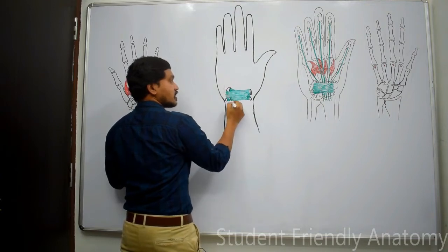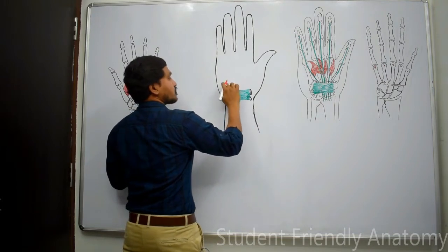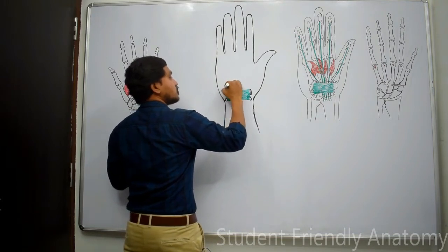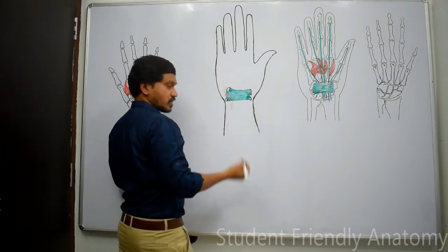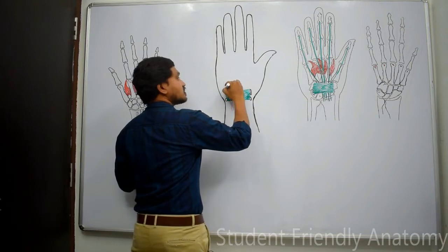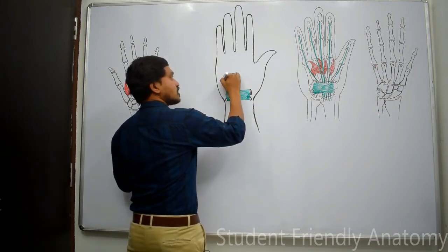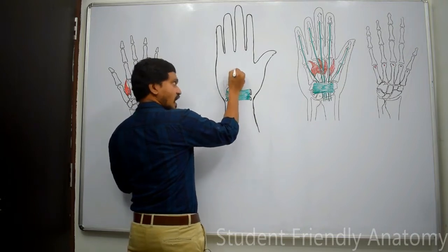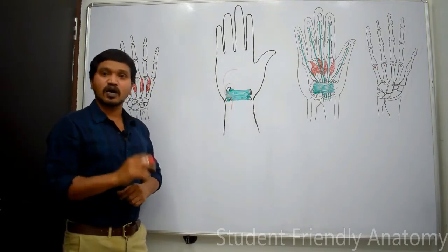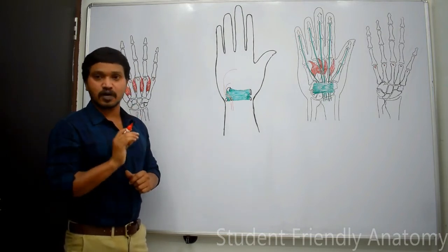The ulnar artery enters into the palm, where it divides into two branches. The main continuation is the superficial branch, and there is also a deep branch. The superficial branch — the main continuation of the ulnar artery — arches laterally and anastomoses with one of the branches of the radial artery to form the superficial palmar arch.